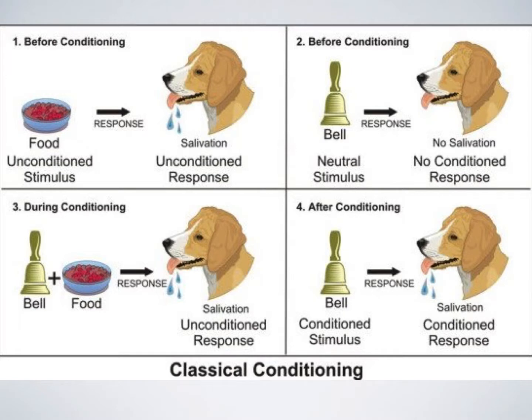Before classical conditioning occurs there is an unconditioned stimulus and an unconditioned response. During Pavlov's experiment the neutral stimulus, which was the bell, and the unconditioned stimulus, which was the food, were paired together to create the unconditioned response of salivation. After repetitions of this pairing the dogs began to show a conditioned response, which was salivating at the sound of the bell.